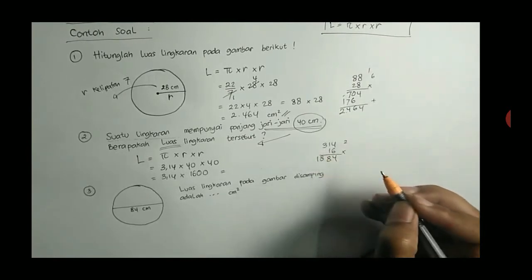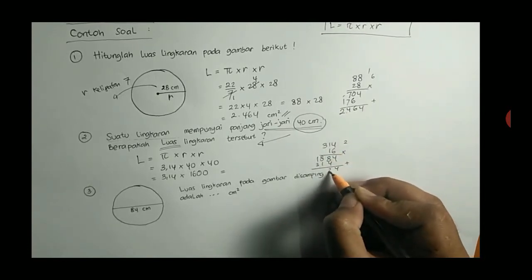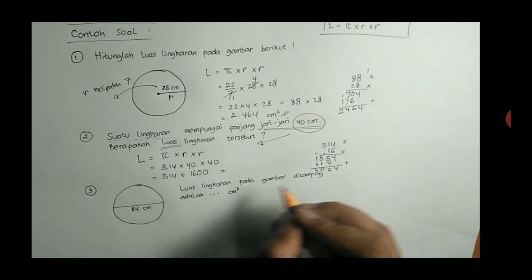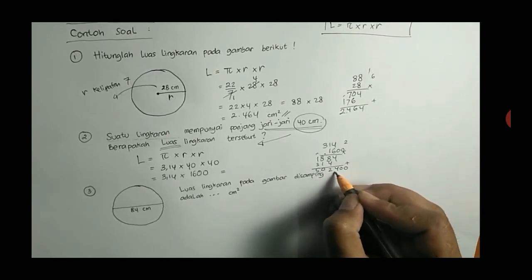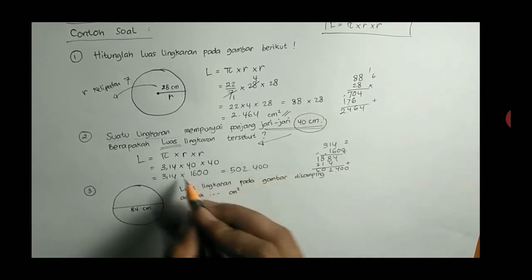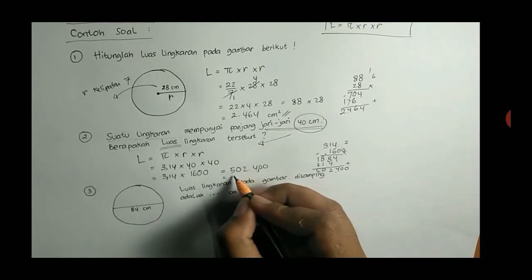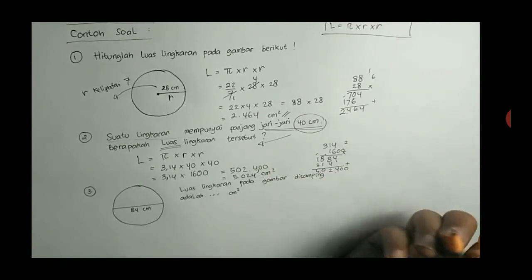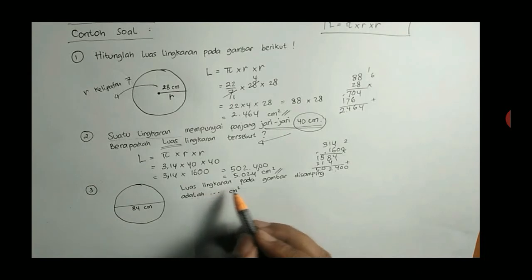Sehingga dihitung 3,14 dikali 1600. Ngitungnya jangan 1600, dikali 16 aja dulu. Koma diapaikan dulu, jadi 314 kali 16. Perhitungan bersusun biasa. Hasilnya adalah 5.024 kalau dikali 16. Karena dikali 1600 berarti dikali 0-nya 2 ditambah 0-nya 2. Hasilnya adalah 502.400 ini kalau dikali 314, padahal di sini dikali 3,14, ada 2 angka setelah koma, berarti hasilnya dikurangi 2 angka setelah koma. Jadi jawabannya adalah 5024 cm persegi.